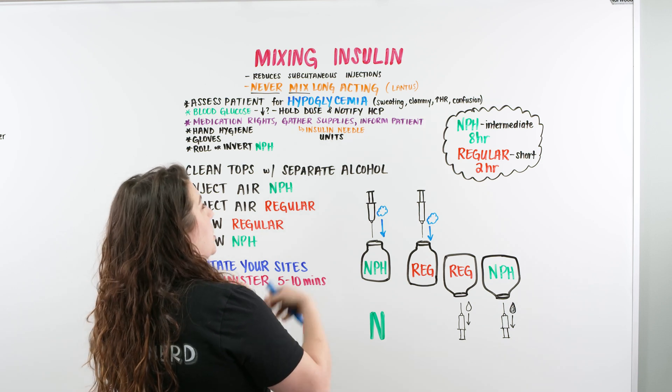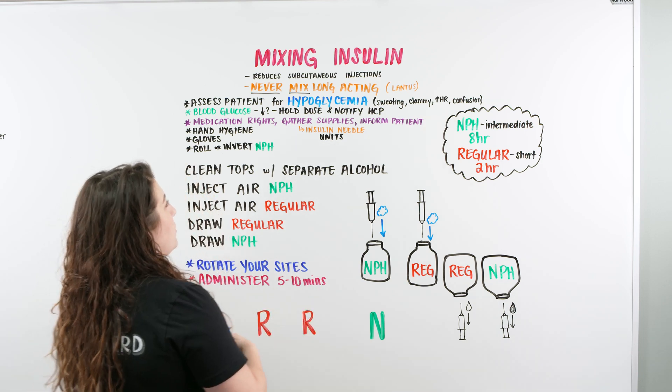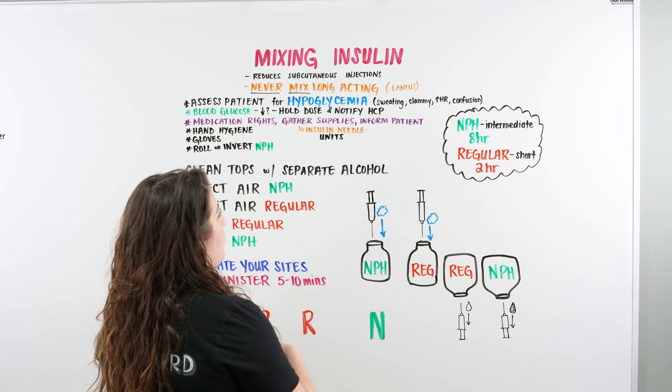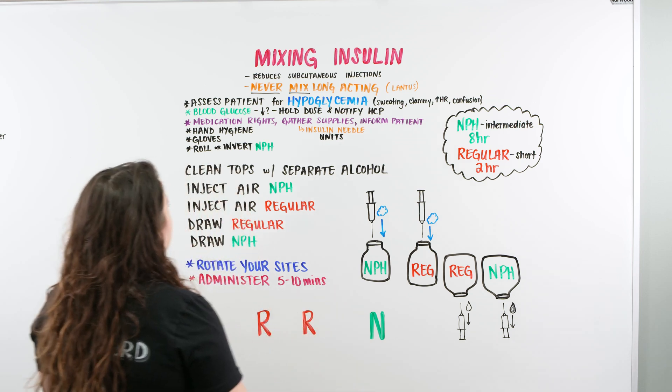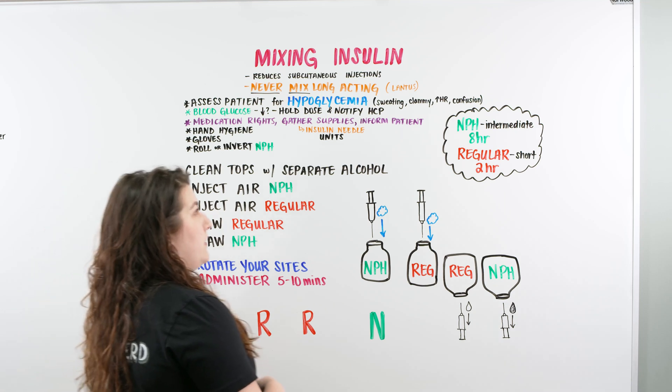Once we check our patient, they are not hypoglycemic. Their blood sugar or glucose is in a correct level that we can be administering their insulin. We are then going to make sure we do our medication rights, verify the order.